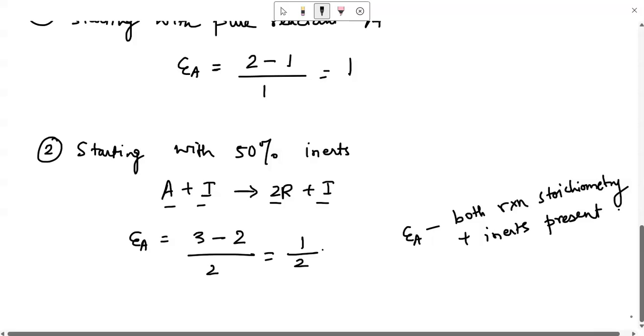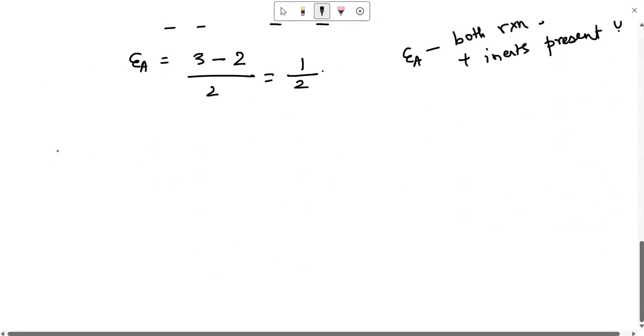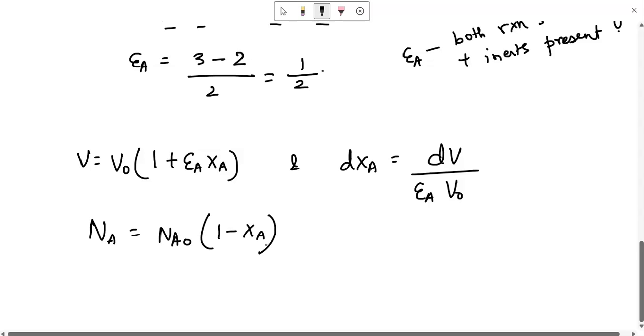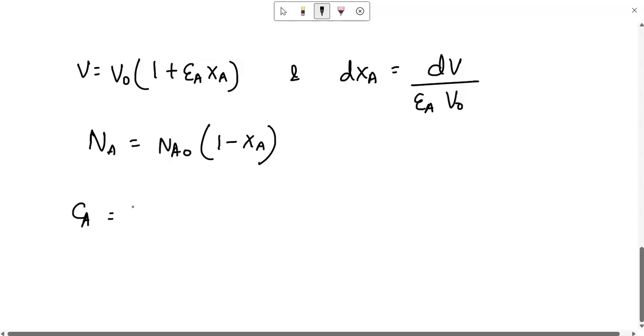This is how we talk about the fractional change in the system volume for variable batch reactors. We had seen that V equals to V naught multiplied by 1 plus epsilon A XA and we can get from there that dXA equals to dV by epsilon A V0. Also if you want to relate nA, then you can write nA equals to nA0(1 - XA).